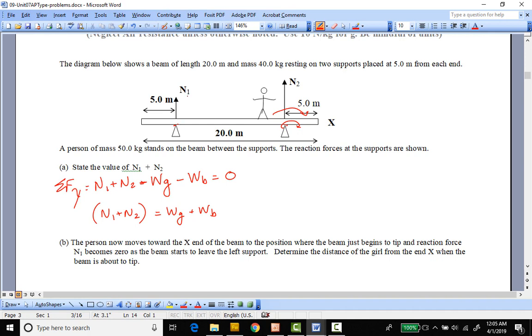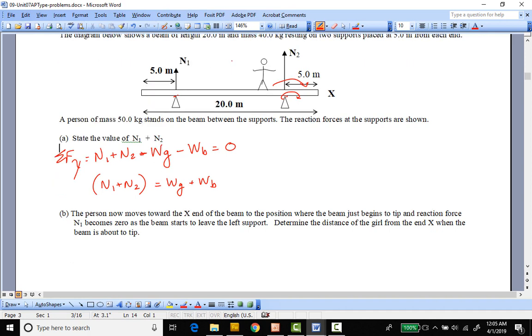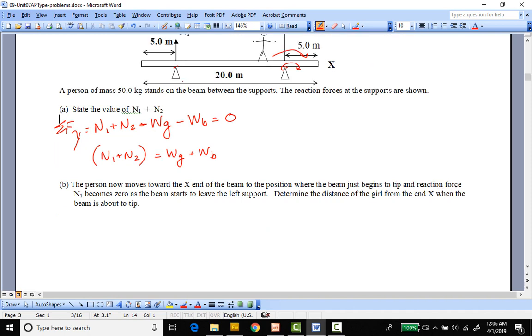goes to zero. So what they're actually asking, determine the distance of the girl from the end X when the beam is about to tip. So we want to solve for when N1 goes to zero. So now in this case we can do a sum of the torque, so we should be able to figure this out with just one equation. So we're going to pivot around N2, because that's where this thing is going to rotate around. And we're going to try to solve for when N1 goes to zero.